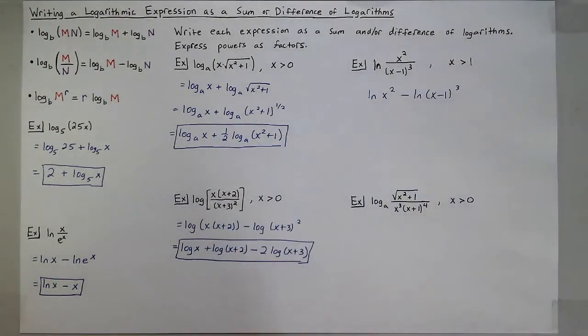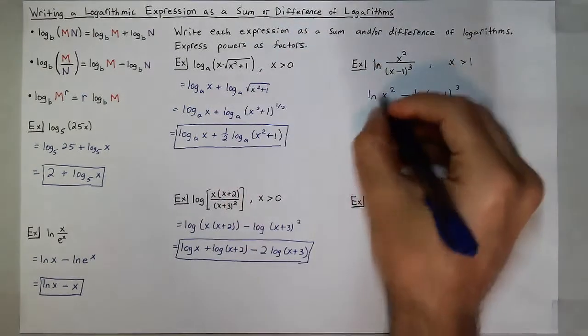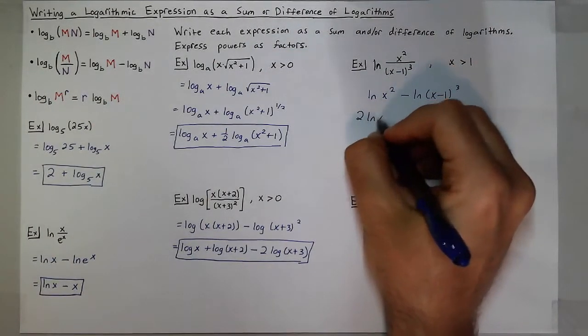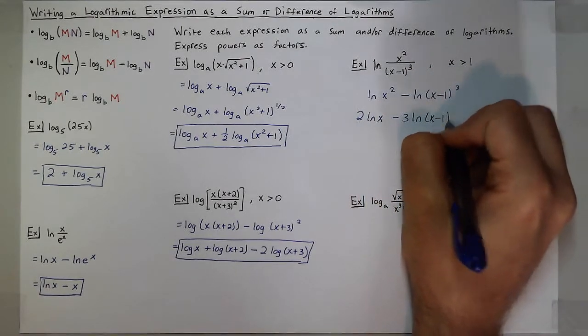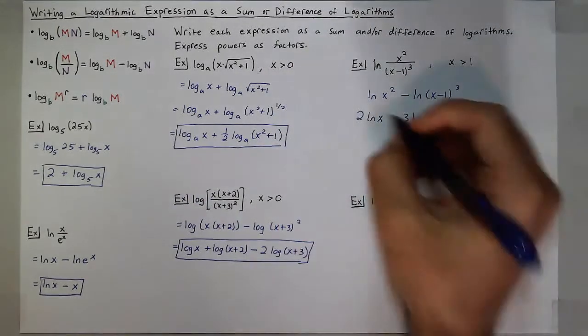This expression only works when x is greater than 1, so we'll have to assume that. Now, these powers can become factors by moving to the front using that third property. So I have 2 natural log of x minus 3 natural log of x minus 1. So now that's expanded as the difference of logarithms.